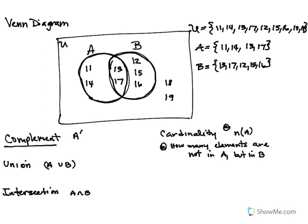The complement means: give me the elements that are in the universe but not in A. The complement says tell me what's in the universe but not in the set I'm taking the complement of. So the complement of A gives all elements in the universe that are not in A. You can cross out the A circle, and what's left would be 12, 15, 16, 18, and 19. Or using roster form, you take all elements of A out and what remains — 12, 15, 16, 18, 19 — is your answer.